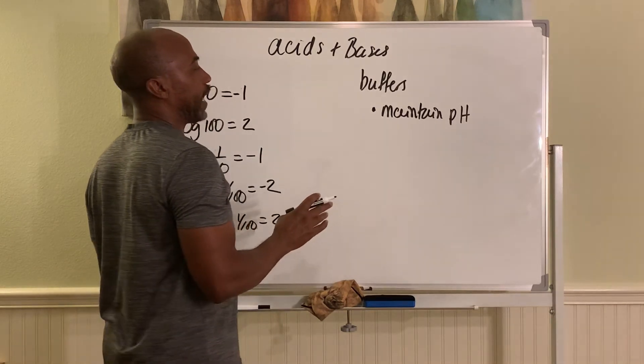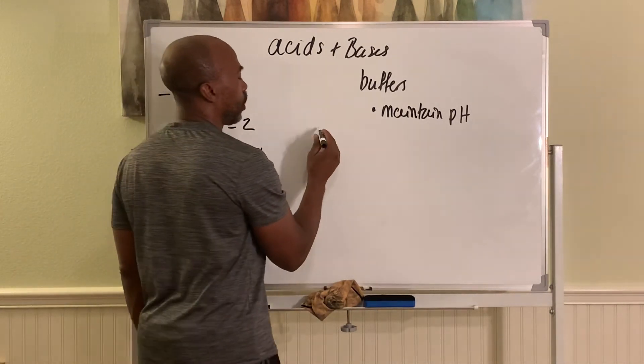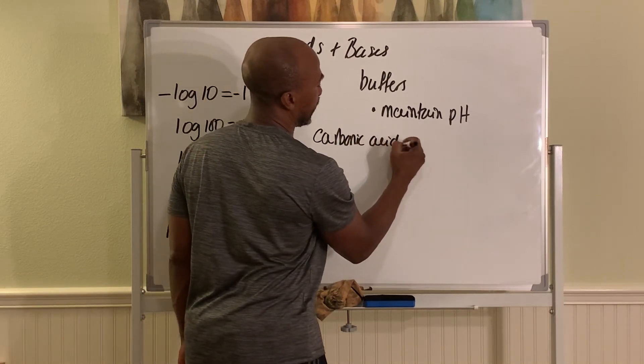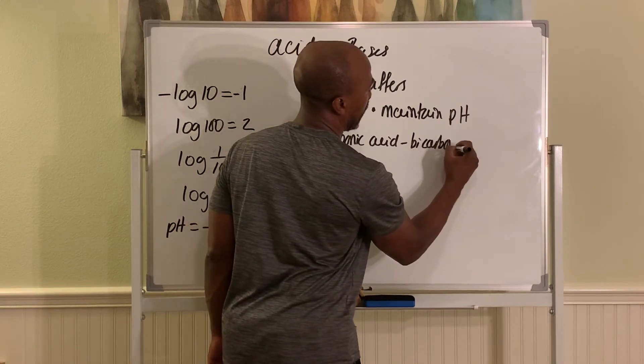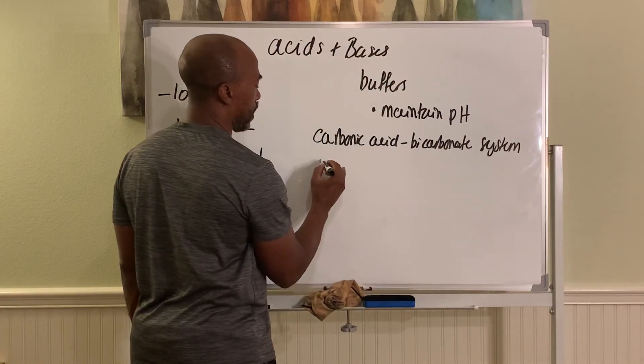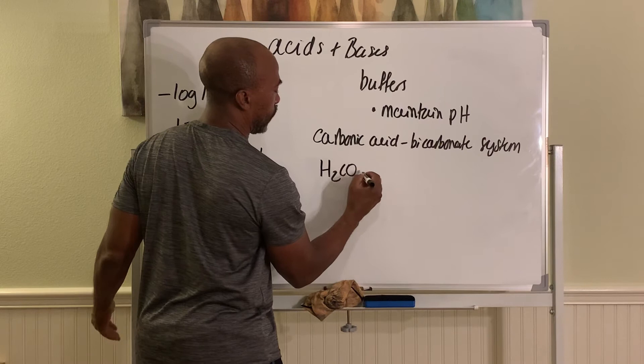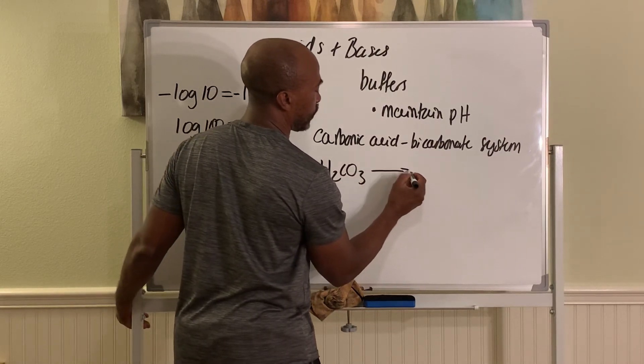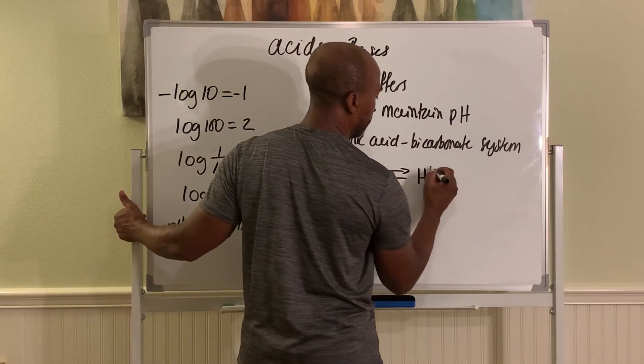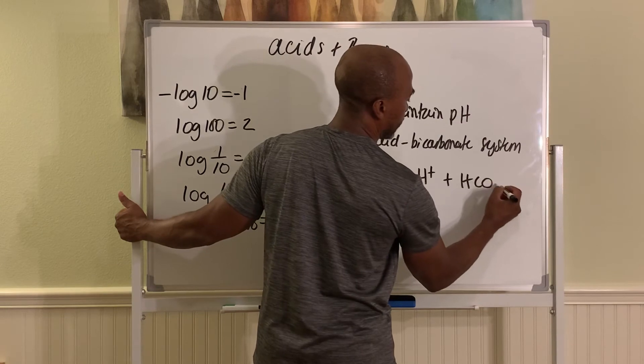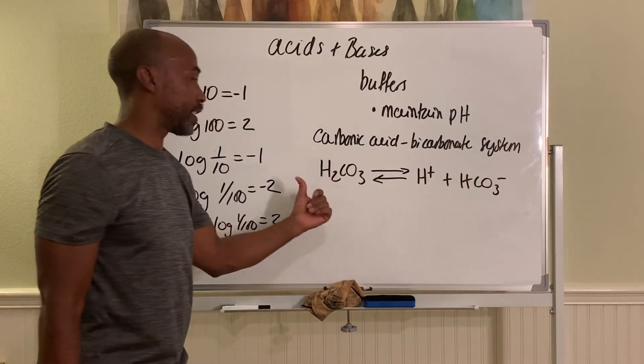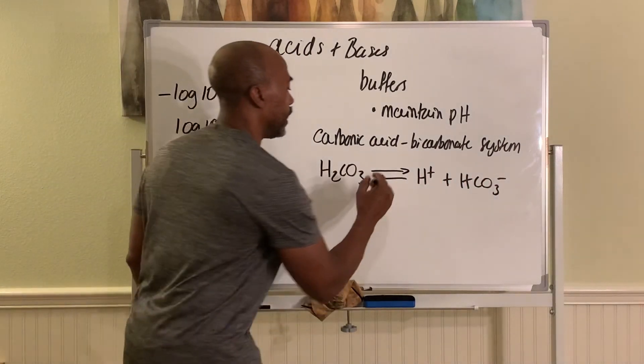So one system that we have to maintain the pH is called the carbonic acid bicarbonate buffer system. In this system, carbonic acid H2CO3 can reversibly dissociate into H plus and bicarbonate HCO3 minus. And so this reaction can go this way or this way. It's going to be reversible, a reversible reaction.